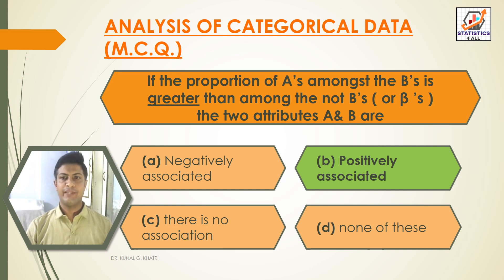If the proportion of A's amongst the B's is greater than among the not-B's (or beta's), the two attributes A and B are positively associated.